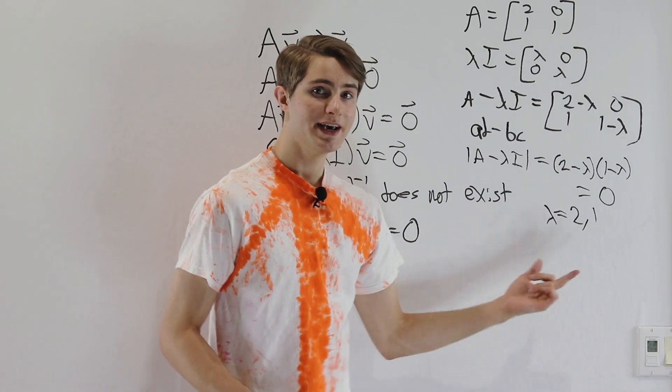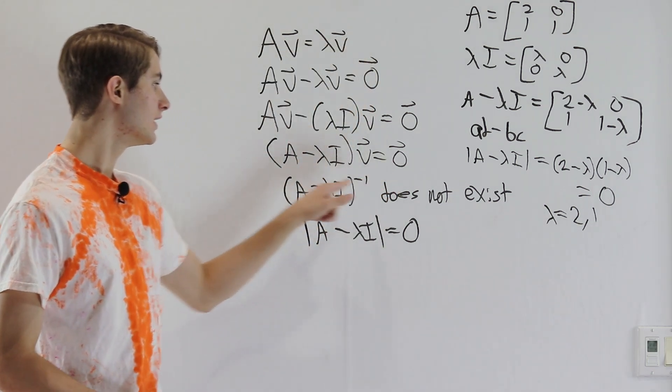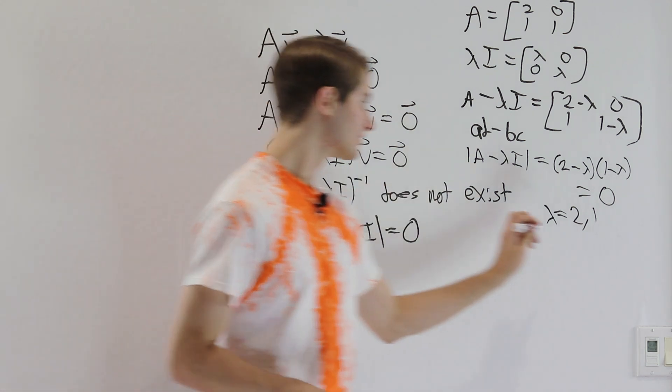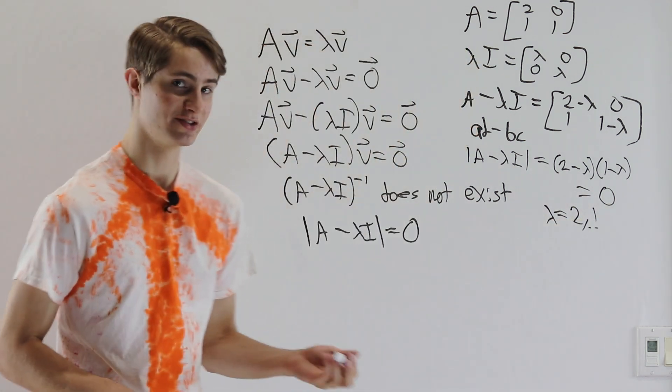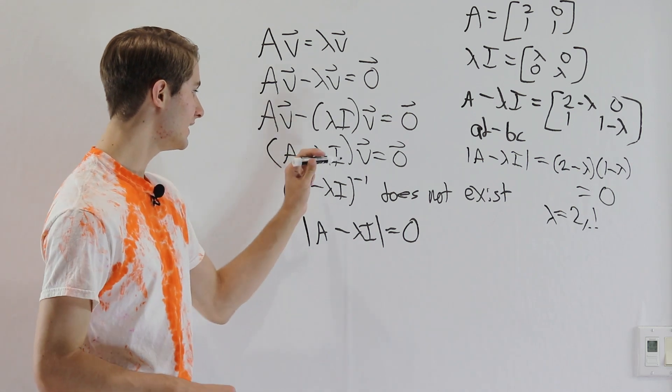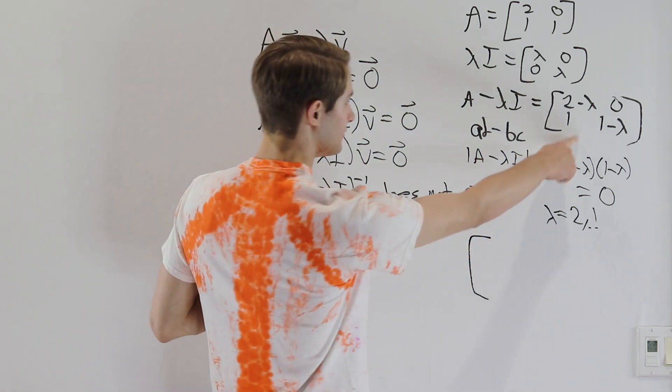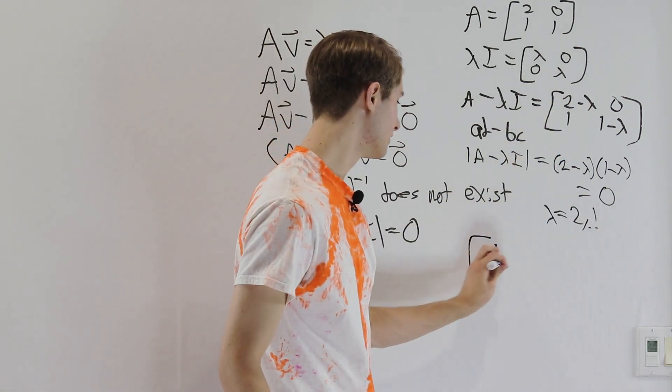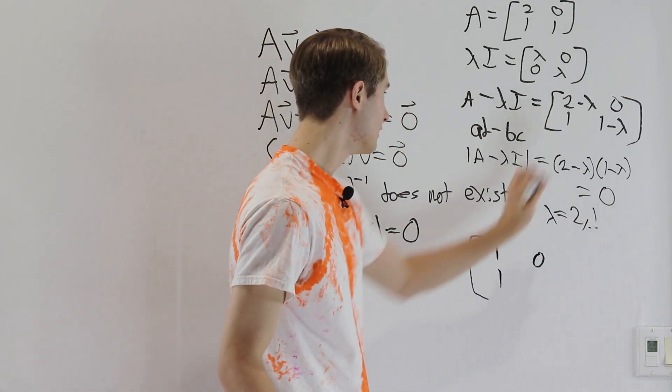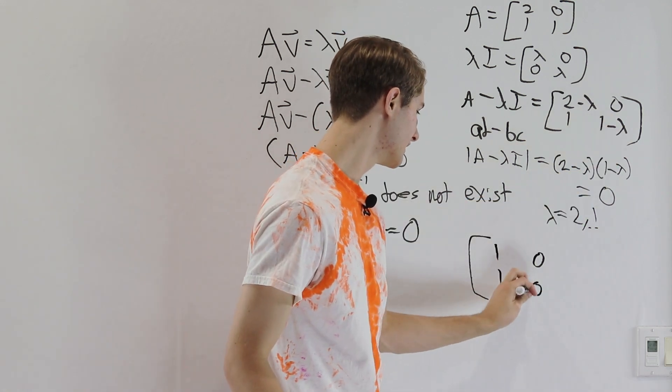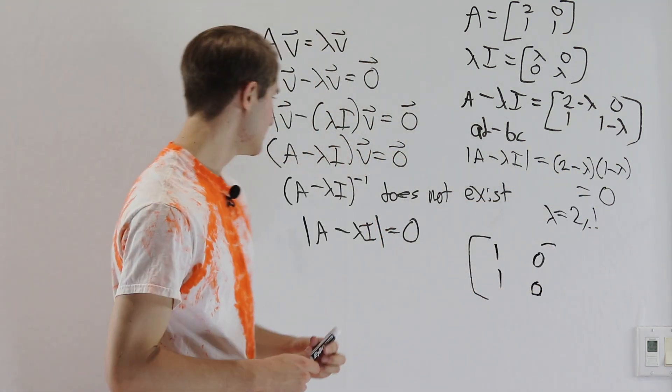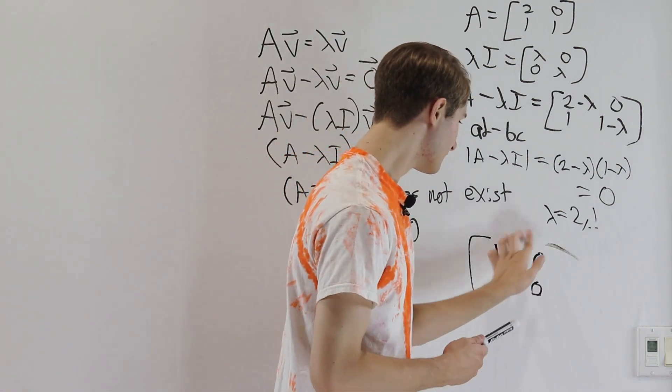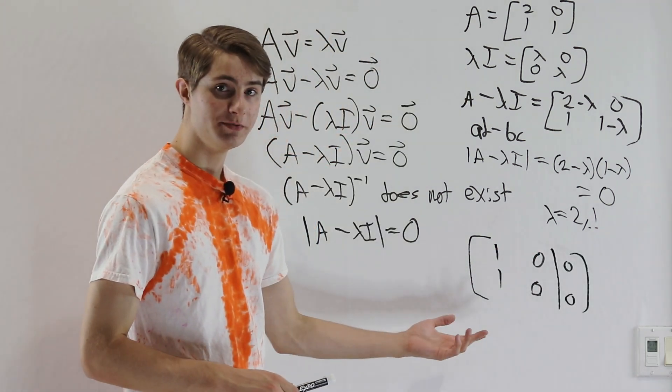So now that we know the eigenvalues, we can go back to this equation right here and plug in our value for lambda, solve using Gauss-Jordan elimination. So let's look at lambda equals 1 as an example. We want to figure out A minus lambda I. Well, that's going to be this matrix right here, but we plug in lambda equals 1. So 2 minus 1 is 1, 0. And then 1, 1 minus 1 is again 0. And then we're going to augment this matrix by the 0 vector because our goal is to solve for V.